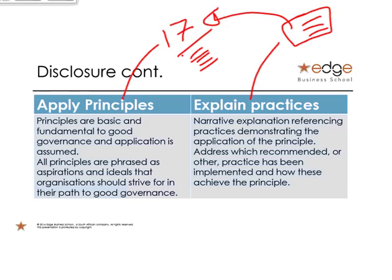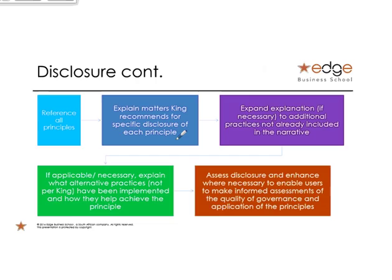They give you examples of how you can meet those goals, or you explain how you did it differently to meet those 17 goals. You start with all the principles, use the King disclosure template, and then adjust it where necessary if you did something slightly different — that's your full disclosure. One of the biggest changes was that little word changing from 'or' to 'and,' making a massive difference in disclosures. That's the first big difference: disclosure.